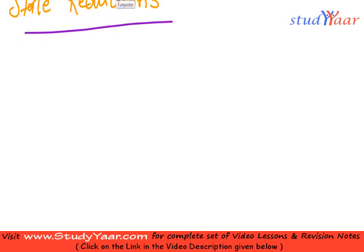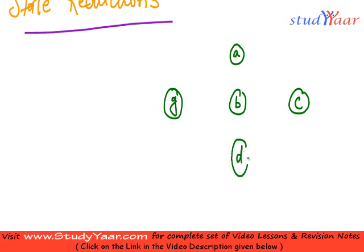For example, let's suppose I have a state diagram which looks like this. This is my first state or any state. Let's suppose this is A. I have a B, I have a G over here, I have a C over here, I have a D over here as well, I have an E, and I have an F. So these are my states and let's look at the transitions.